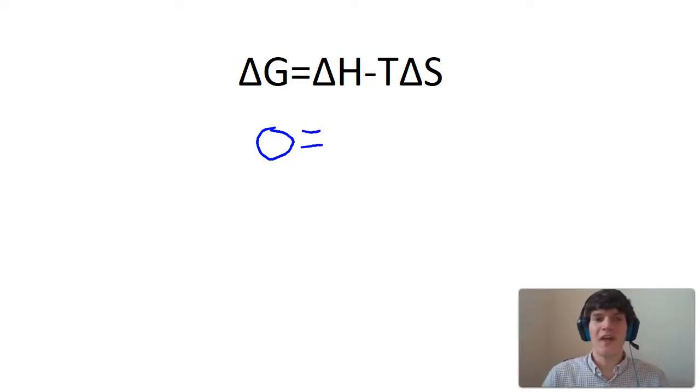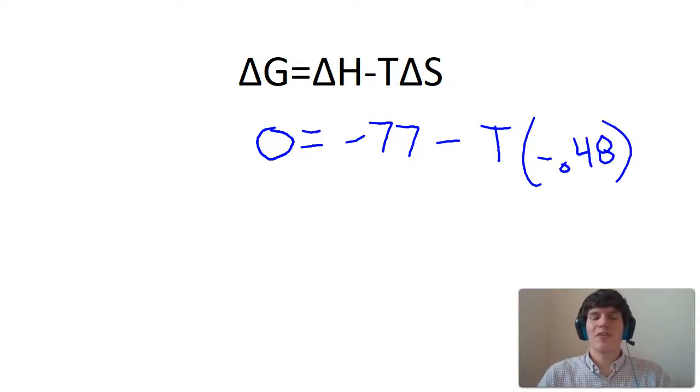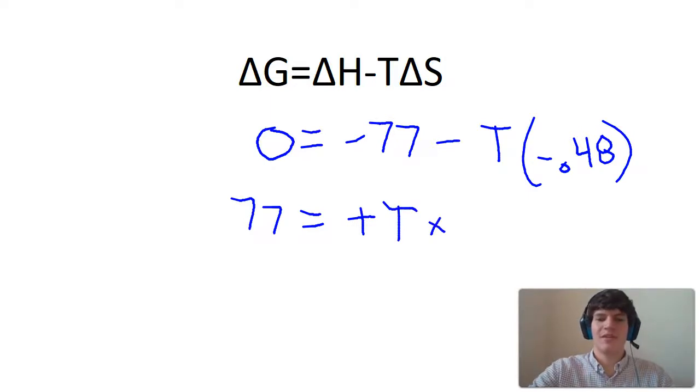And we are told that the enthalpy value for this equation is negative 77, and we're solving for temperature, and we know that the entropy value is negative 0.48. Now, moving forward with the math, if we add 77 to both sides, we're going to get 77 equals negative or positive t times 0.48. And finally, we'll divide both sides by 0.48.